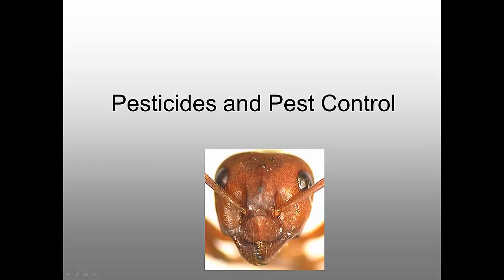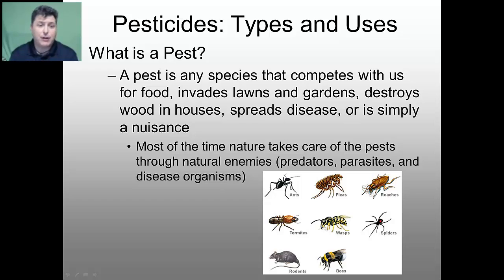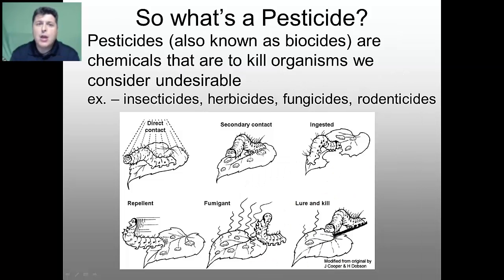A pest is basically any species that will compete with us for food, invade our lawns and gardens, destroy wood and houses, spread disease, or is simply a nuisance. Most of the time nature takes care of these pests through natural enemies like predators and parasites, as well as disease organisms that will naturally kill our pests.